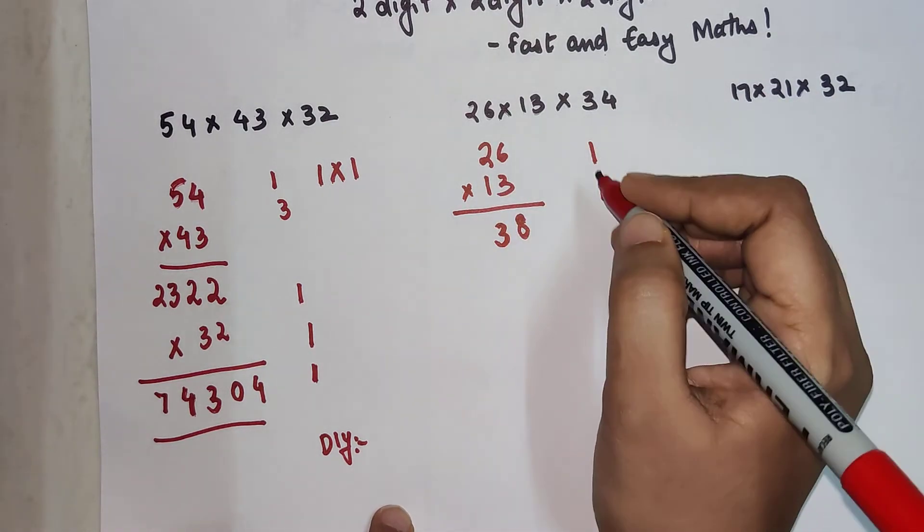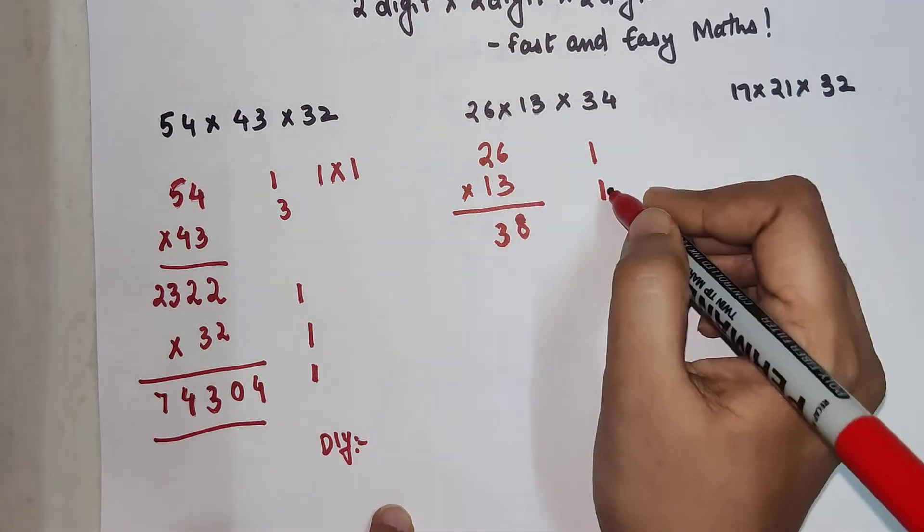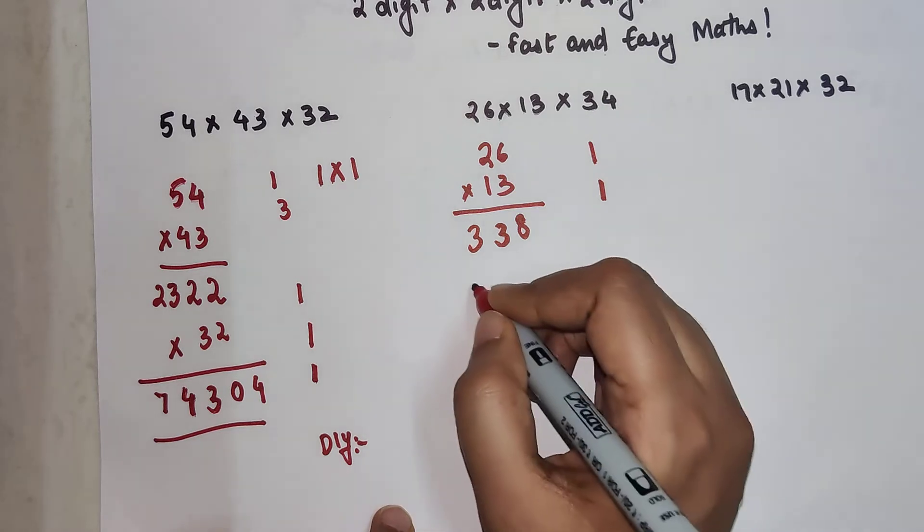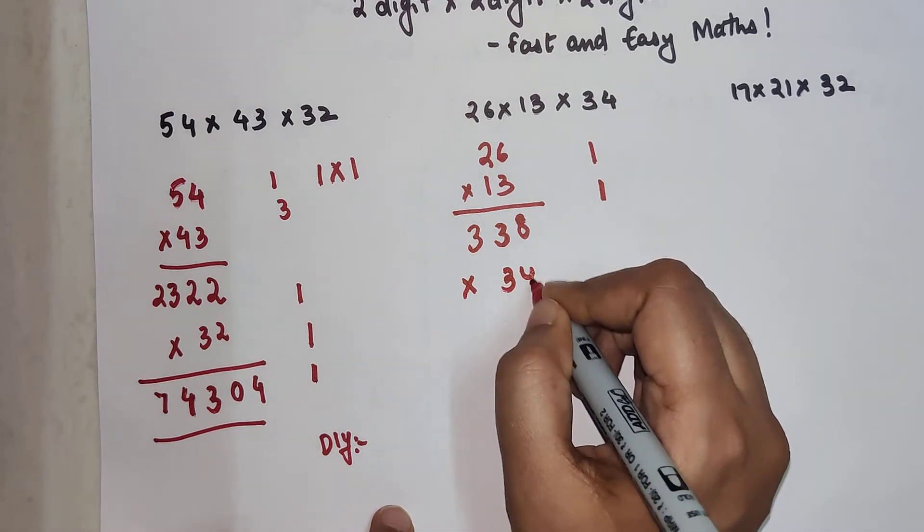2 into 1 is 2. 2 plus 1 is 3. So this is your answer for 26 into 13. And that has to get multiplied by 34.